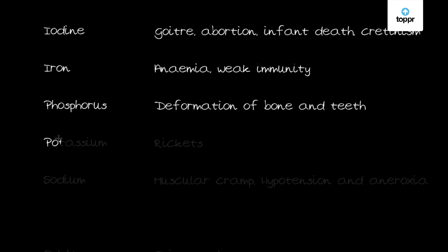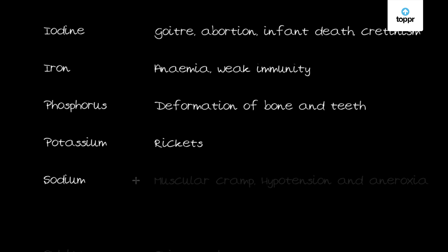Next is potassium. Potassium is the principal cation in the cytoplasm, inside the cell. It controls nerve excitability and muscle contraction. The dietary deficiency of potassium causes rickets among children.